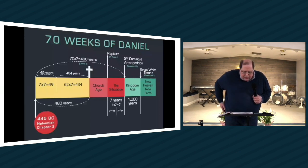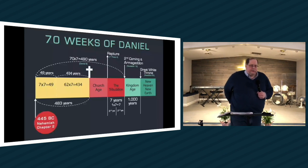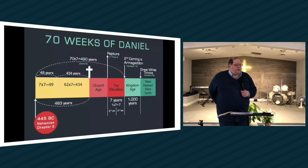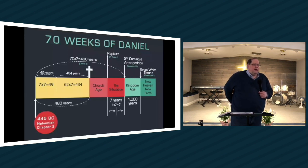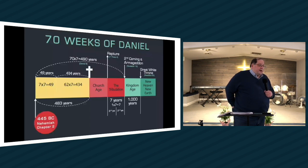The 70th week of Daniel corresponds to what period of seven years? Yes, the tribulation period. The 70th week, that last week of those 490 years, which is yet in the future, corresponds to the tribulation, the seven-year tribulation period. They are the same thing. The 70th week is the tribulation period.